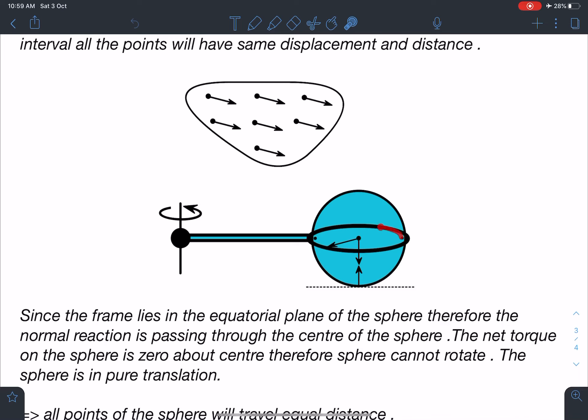So here we can say that about the center C neither this mg nor this normal reaction is producing any torque. Even the forces acting on the ring or the frame are not going to provide any torque in that case.